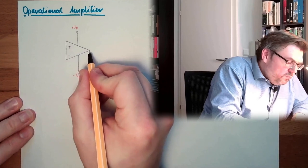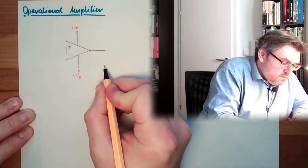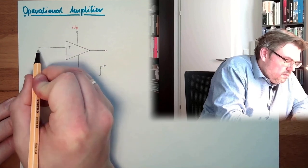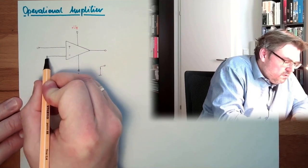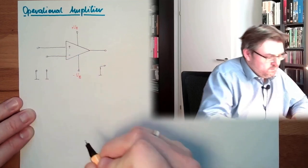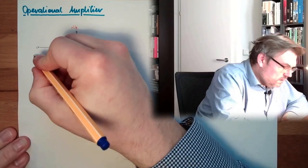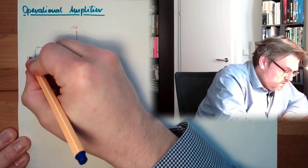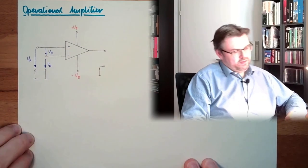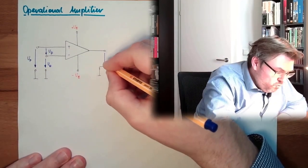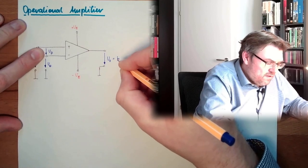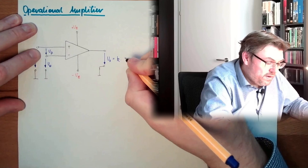Here we have an output, and we have a positive input, and we have a negative input. So here we have UP for positive, here we have UN for negative, and here we have UD for difference, this is the difference. And here we have UO, an output voltage, and this is the K, gain factor of the operational amplifier multiplied by the differential voltage here.